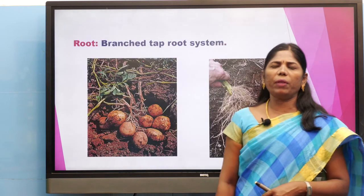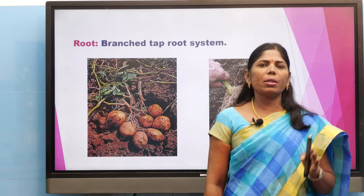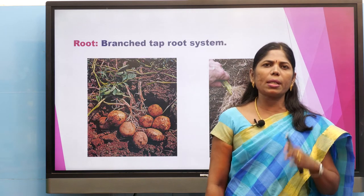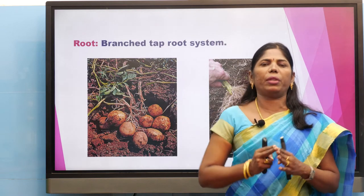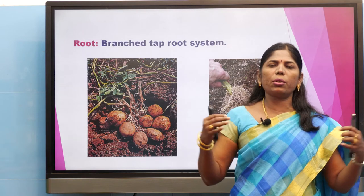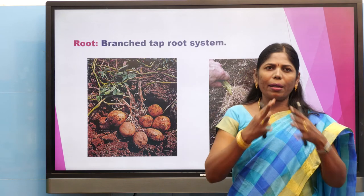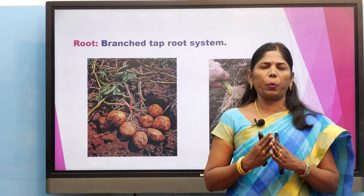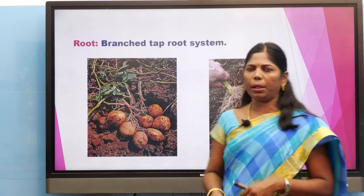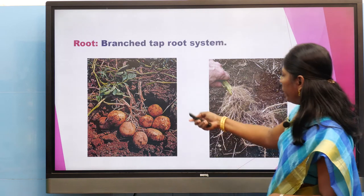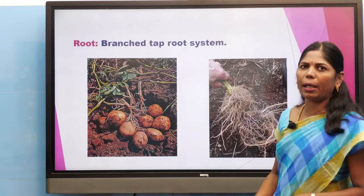Since it belongs to class Dicotyledonae, it has a tap root system. The main root arises from the radicle of the embryo, giving rise to secondary and tertiary roots — that is a branched tap root system. This is the root of potato and tomato, both belonging to Dicotyledonae.